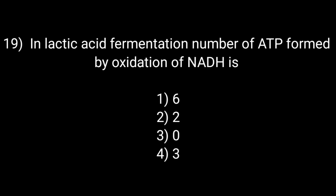In lactic acid fermentation, the number of ATP formed by oxidation of NADH is: Option number first: six. Option number second: two. Option number three: zero. Option number fourth: three. The correct answer is option number three: zero.